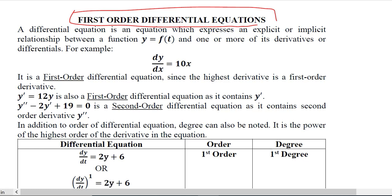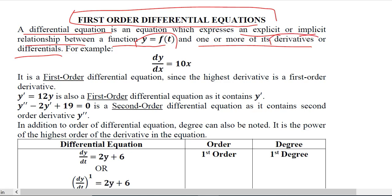The first thing about these equations is that they express an explicit or implicit relationship between the function — for example, y is a function of t — and one or more of its derivatives or differentials. So in these equations we are not just talking about one function; we are talking about the function and its relationship with the derivative or differential of it.